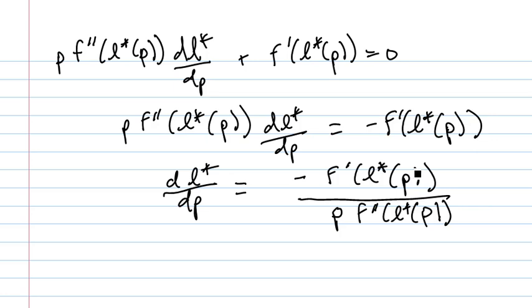F prime is positive at the optimum. More labor input, more output. So minus it is negative. F double prime is negative by the second order condition. So you have a negative over a negative. That's a positive. That's the result. As you raise the product price, the optimal labor input goes up.